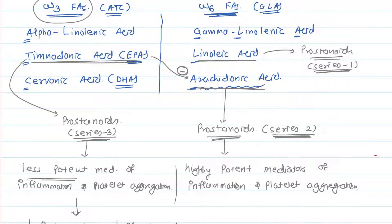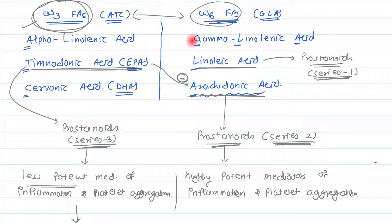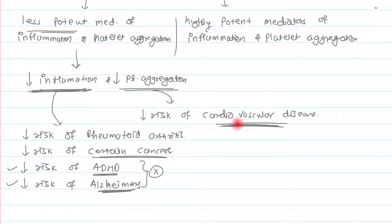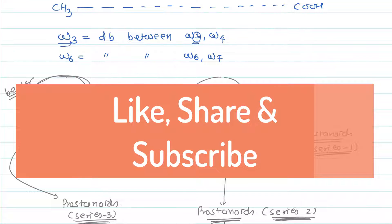Omega-3 fatty acids have many health benefits, whereas omega-6 fatty acids, being highly potent mediators of inflammation and platelet aggregation, don't offer those same benefits. However, we cannot say omega-6 fatty acids are bad — linoleic acid, gamma-linolenic acid, and arachidonic acid are all essentially important with structural functions. Both omega-3 and omega-6 fatty acids give health benefits, but omega-3 is better overall. One last fact: linoleic acid can give rise to arachidonic acid, and alpha-linolenic acid can also synthesize timodonic acid.